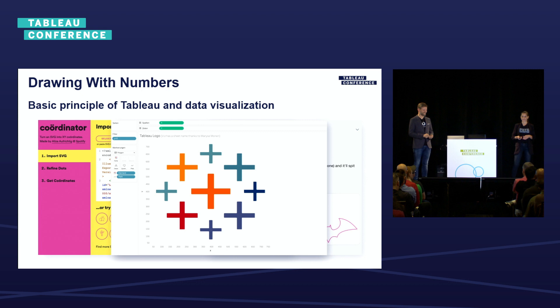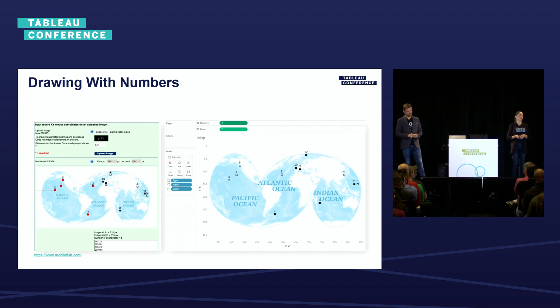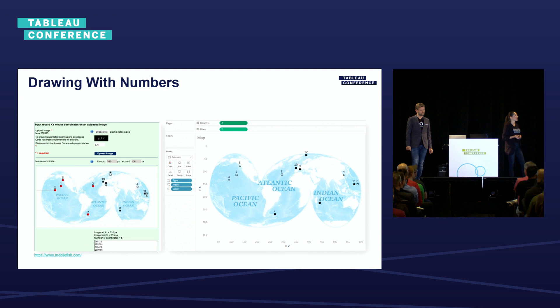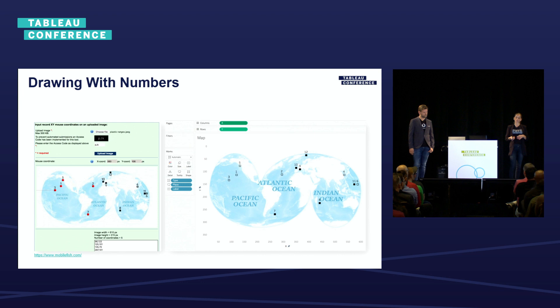Sometimes we need to plot only some data points from an image. I recommend another free online service — the Mobile Fish tool. It allows you to upload an image and record X and Y coordinates by mouse clicks, then save the data set into a CSV or Excel file. The next step: bring it to Tableau. I used this tool to get the coordinates for rectangle shapes on a map projection for strawberries.